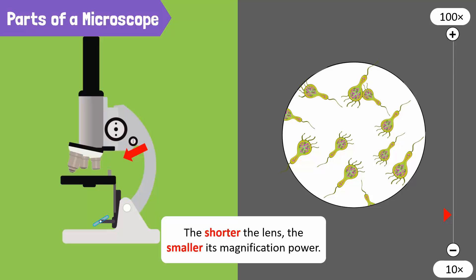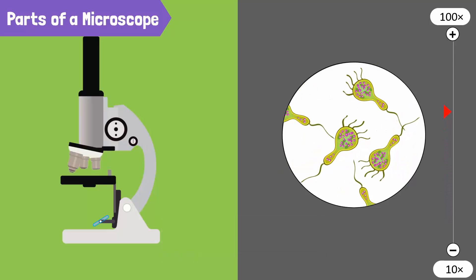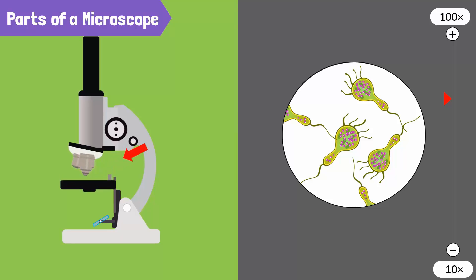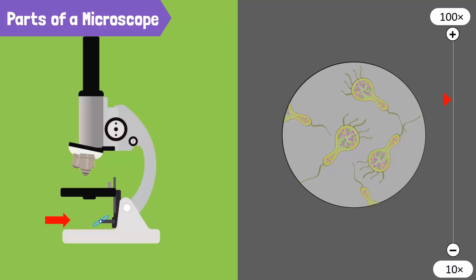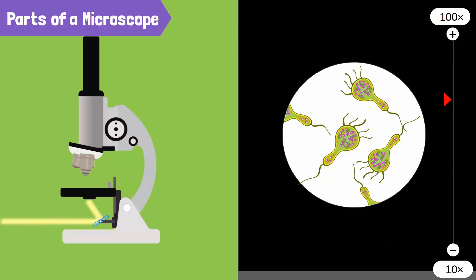If you want to use a high-powered lens, you have to move the stage down so that the lens doesn't crash into the slide. Then, adjust the light source by rotating the mirror to reflect light onto the specimen.